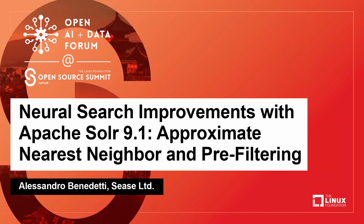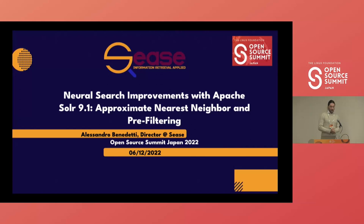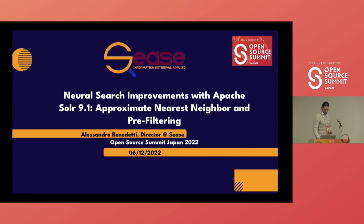Hello everyone, my name is Alessandro Benedetti and today I'm going to talk to you about the neural search improvements coming with Apache Solr 9.1, specifically talking about approximate nearest neighbors and pre-filtering. Welcome and thank you for attending.